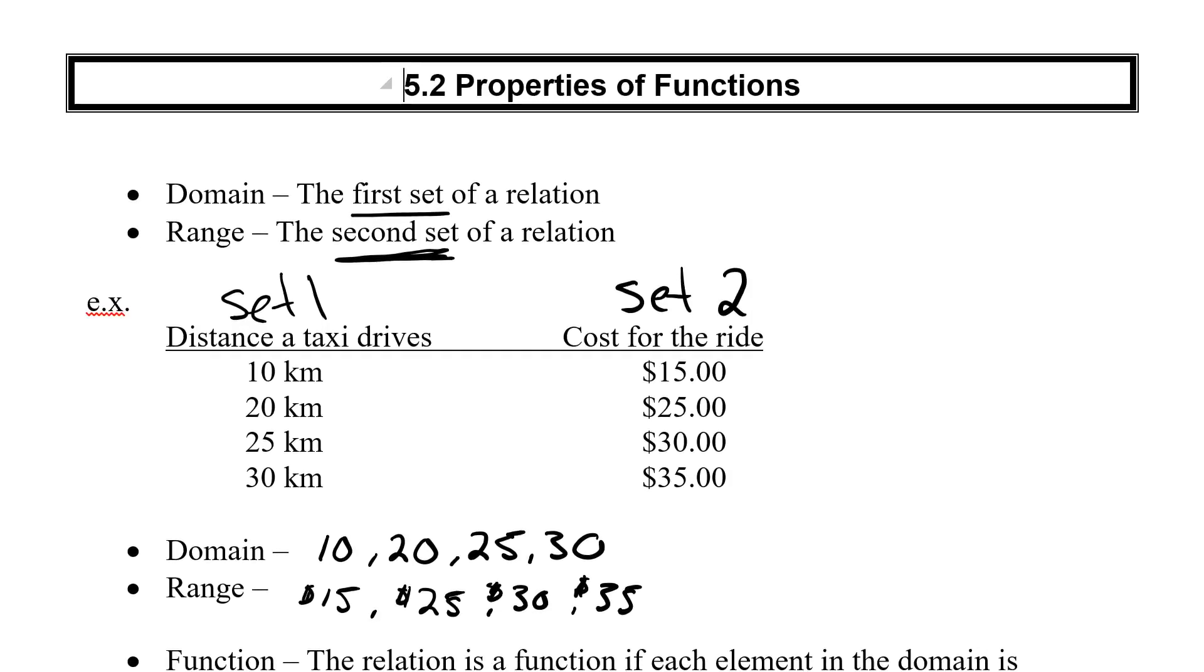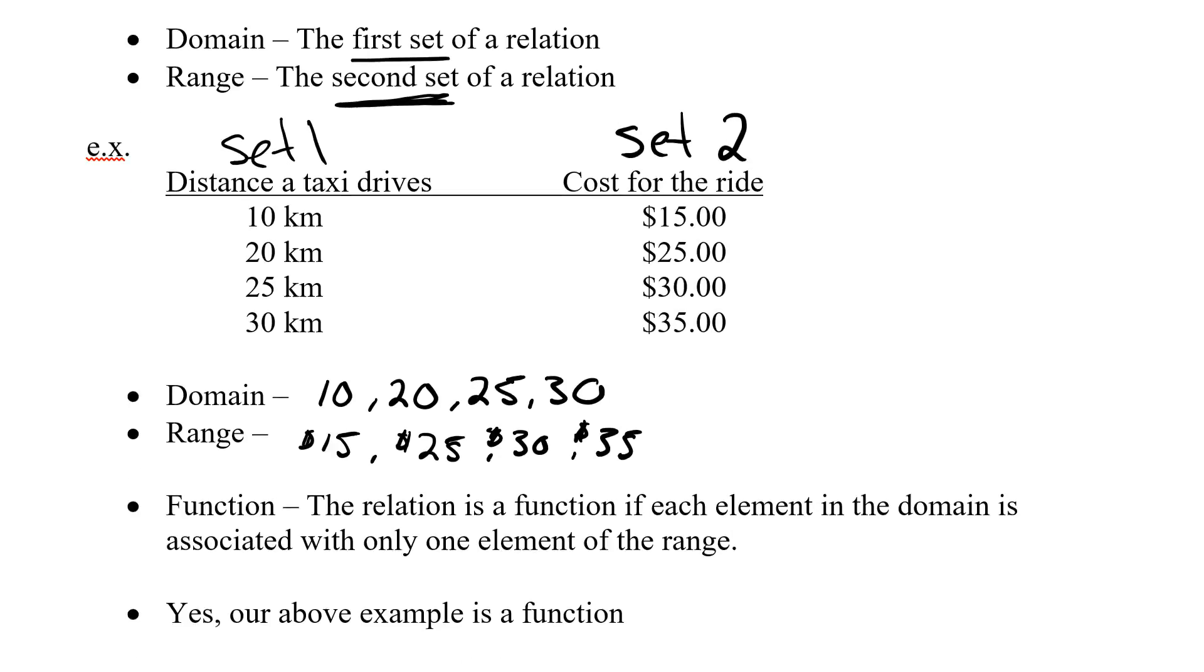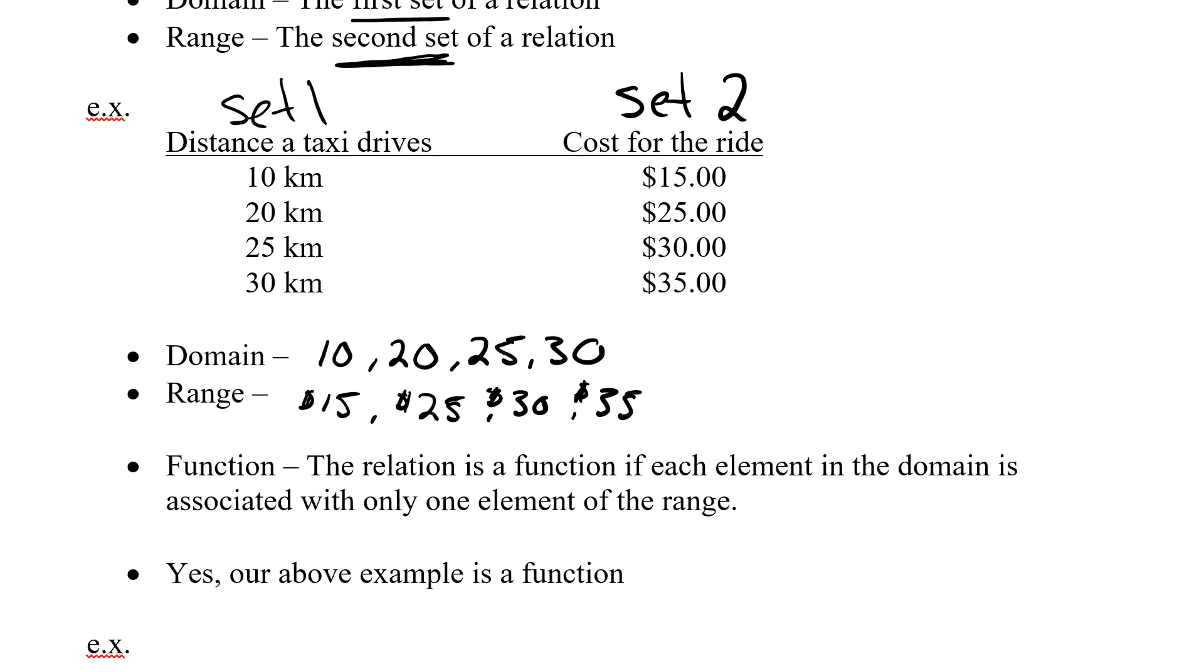Once we have the domain and the range, we want to get the idea of a function. A function is a relation. The relation is a function if each element in the domain is associated with only one element of the range.